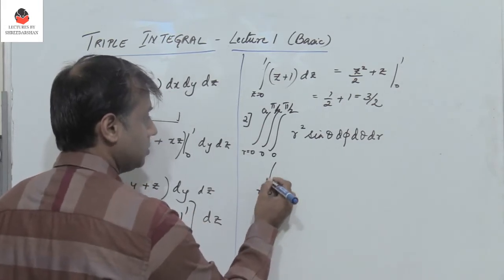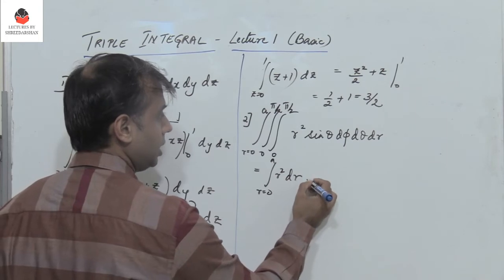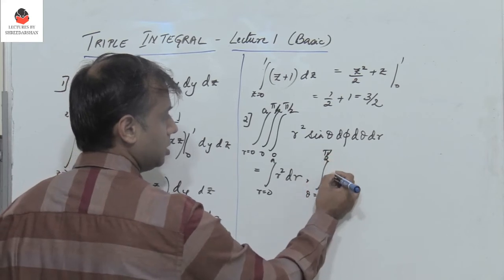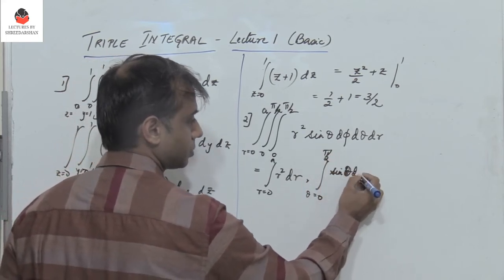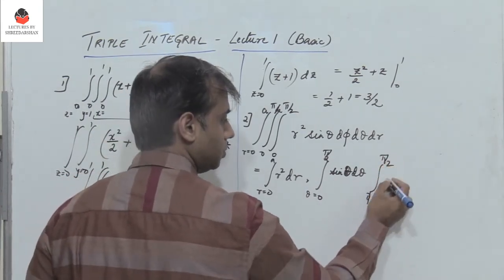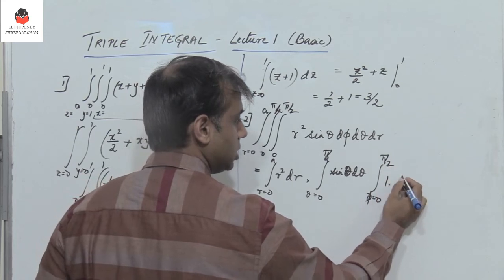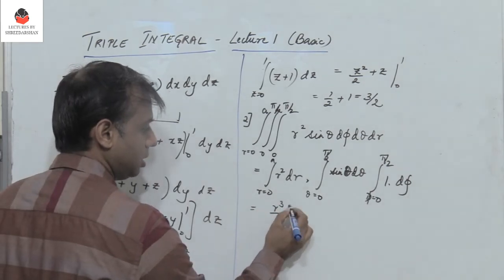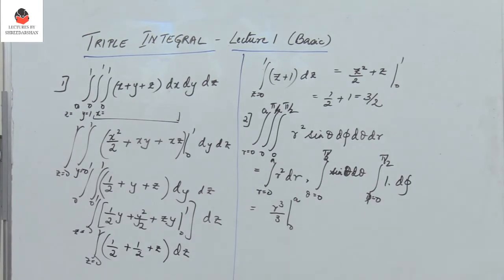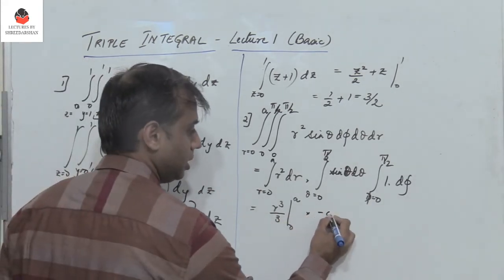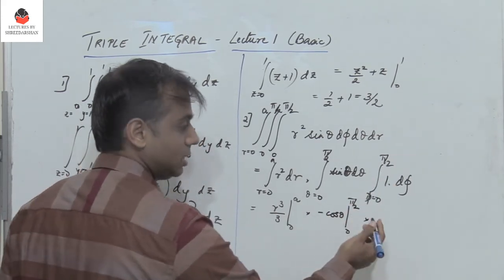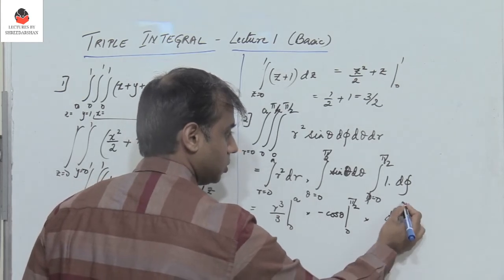We separate the integral as: integral from 0 to a of r² dr, multiplied by integral from 0 to π/2 of sinθ dθ, multiplied by integral from 0 to π/2 of 1 dφ. The integral of r² is r³/3 from 0 to a. The integral of sinθ is −cosθ from 0 to π/2. The integral of 1 dφ is φ from 0 to π/2.